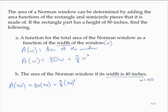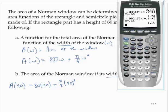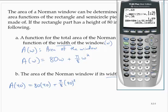All right, and we'll approximate that. Let's see, we'd have 80 times 40 plus pi. Pi is your second function of the carat. So pi over 8 times 40 squared.